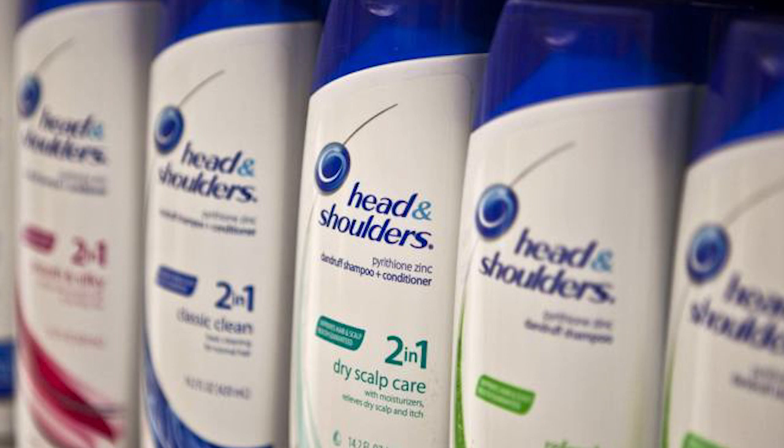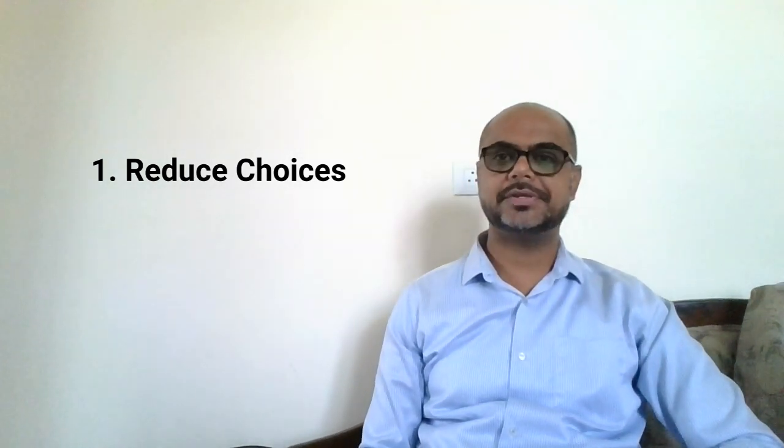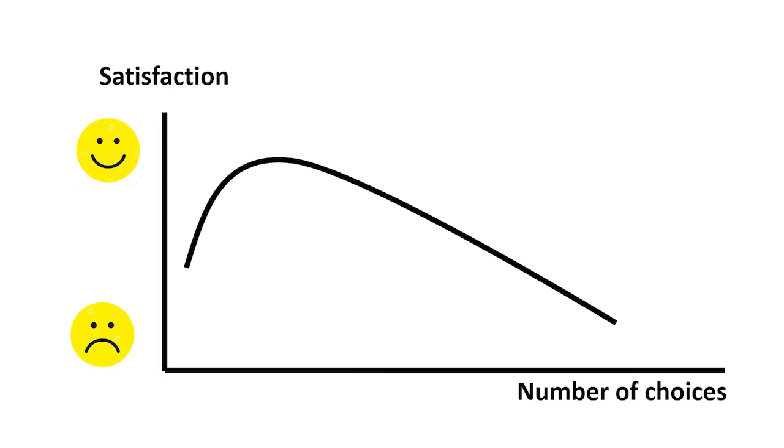When Procter & Gamble went from 26 different kinds of Head & Shoulders products to just 15, they saw an increase in sales by 10%. The good news is that we as product strategists and designers can make a huge difference. I'm going to give you 10 commandments to help your customers make the right decisions — just kidding, these are just guidelines.